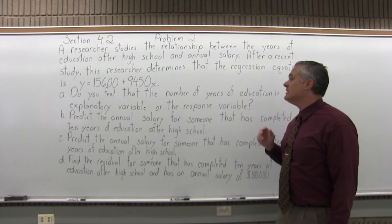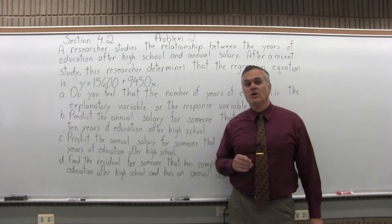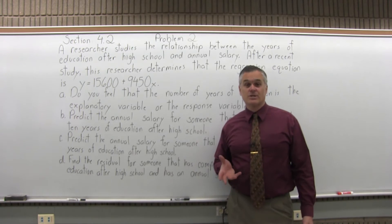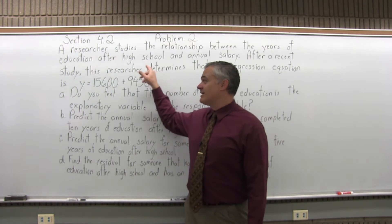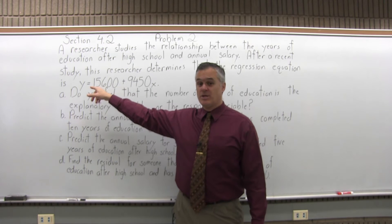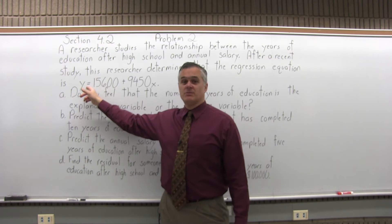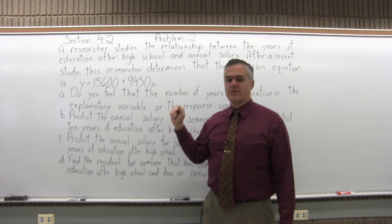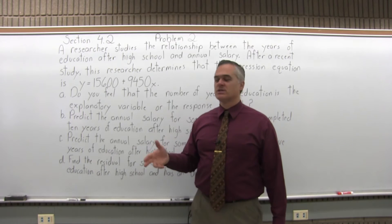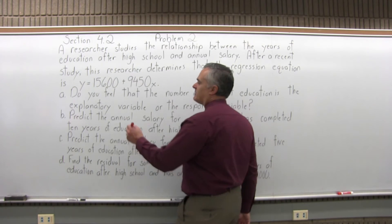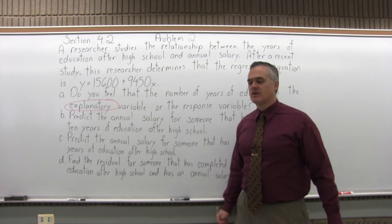Part A: do you feel that the number of years of education is the explanatory variable or the response variable? The number of years of education is what you put in for x to get a prediction from. So that makes it the explanatory variable, and the salary would be the response variable.